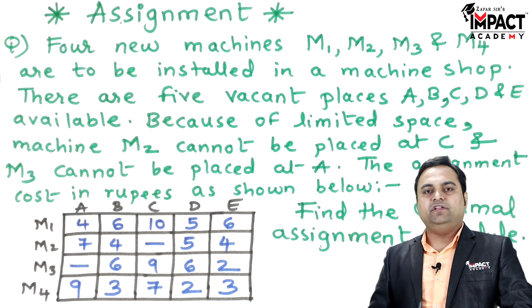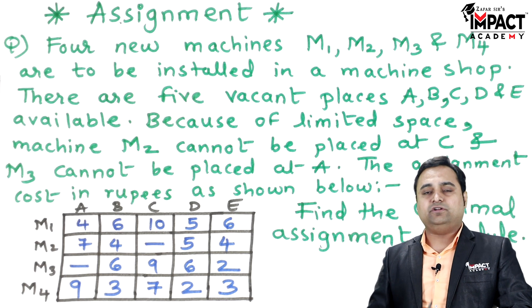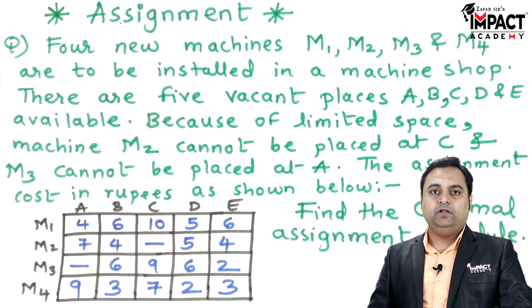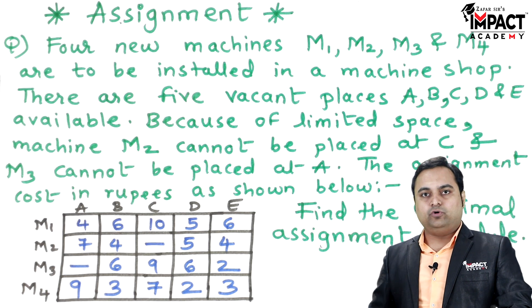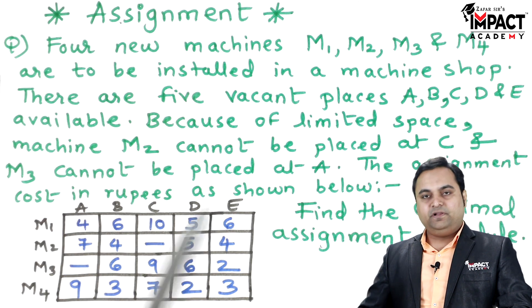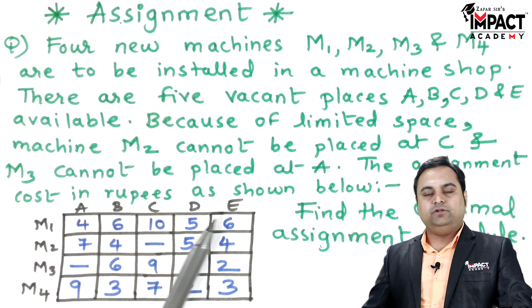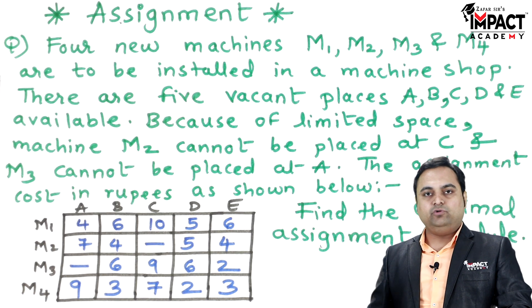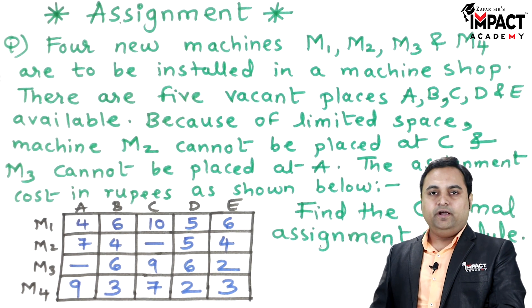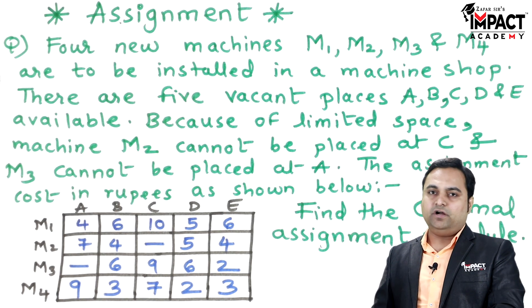To start the solution, we first check if the total number of rows and columns are equal. There are four machines, meaning four rows, and five vacant places, meaning five columns. Since there is an imbalance, we have to add a dummy row. The method we are using here is called the Hungarian method.